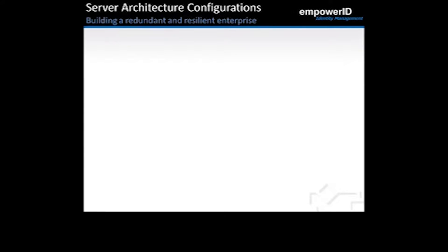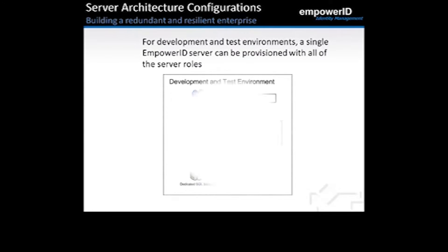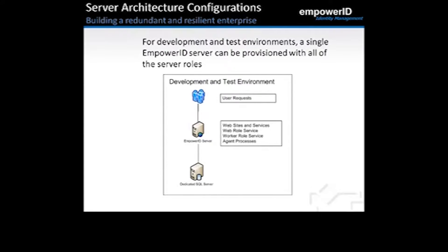Server architecture configurations allow you to build a redundant and resilient enterprise using Empower ID. For development and test environments, we support a single Empower ID server provisioned with all server roles — websites, web role services, worker role services, and agent processes all running on the same server. This is a completely valid configuration for small test environments.